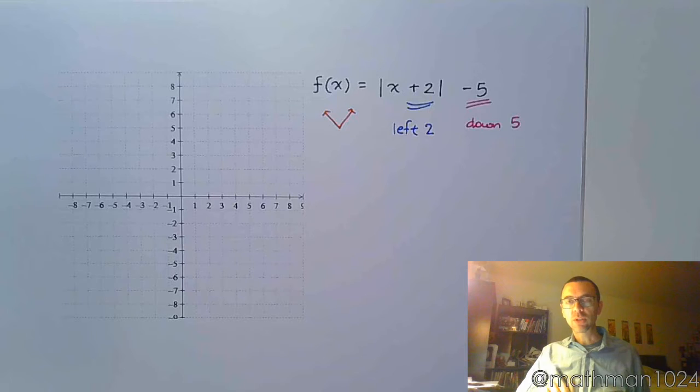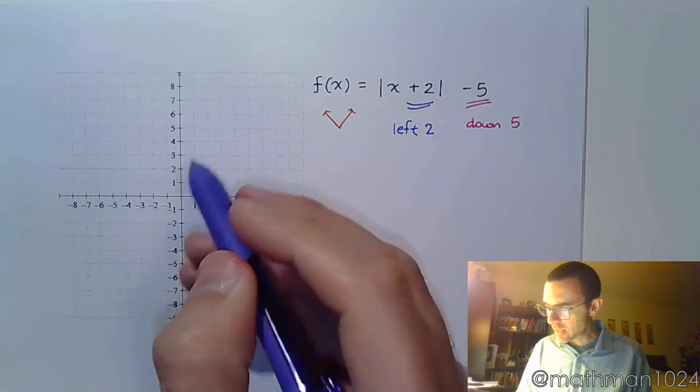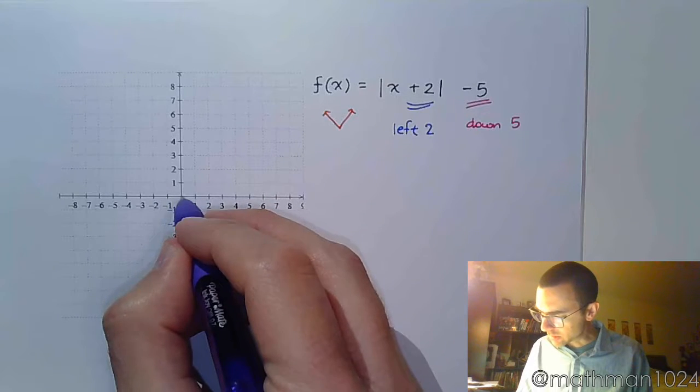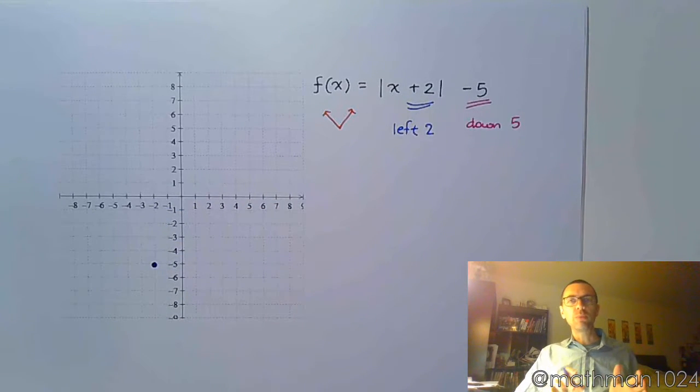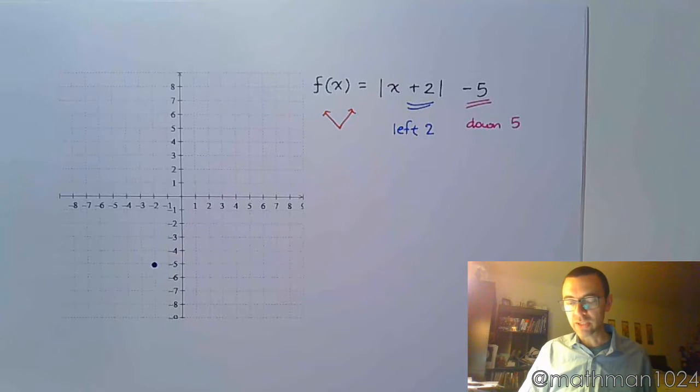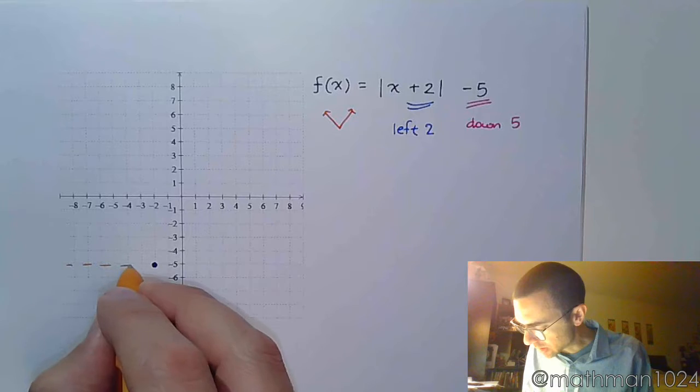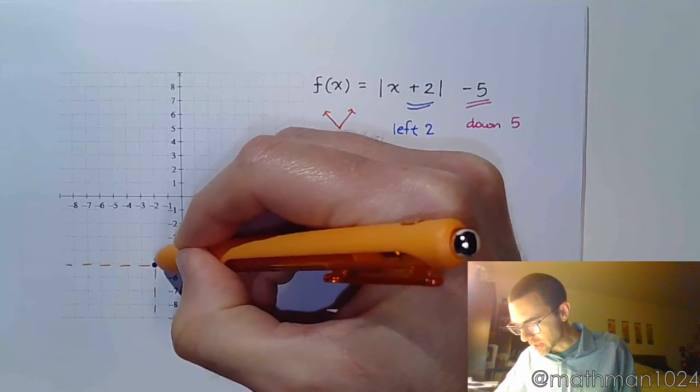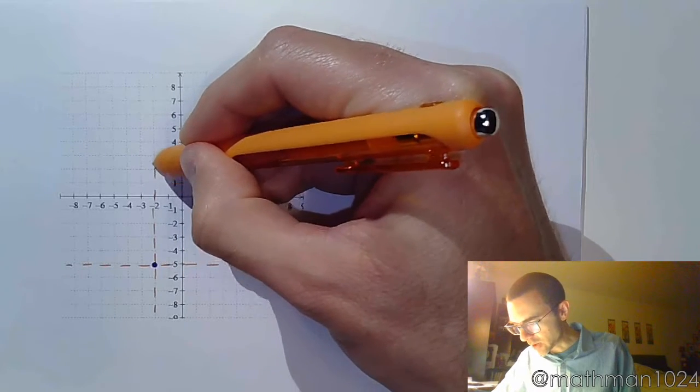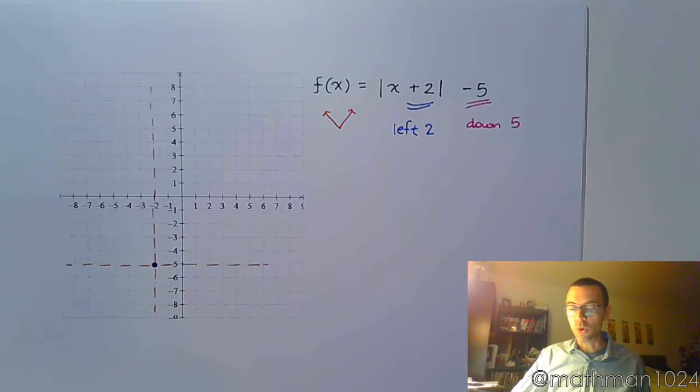Taking this information into account, go left 2, down 5. So from here, left 2, down 5, that's going to be your key point. Now, here's something that I like to do to try to keep things organized. I'm going to dash a horizontal and vertical line that will crisscross right here at that new point. This is going to act as my new origin.